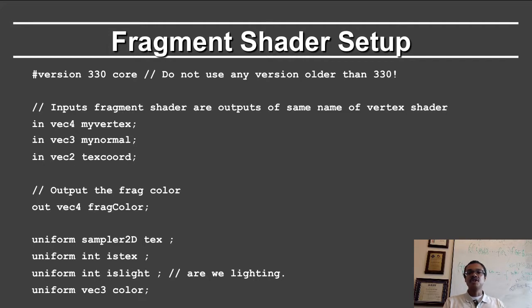Notice that the version is GLSL 330 core. The inputs coming into the fragment shader are MyVertex, which was from the vertex shader, MyNormal, and Texture Coordinate. These values will be interpolated from the vertex shader and provided to each pixel or fragment. We will output the fragment color, which is the key value you get out from the fragment shader — what should be the color of the corresponding pixel.